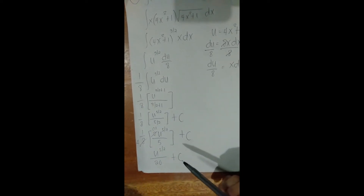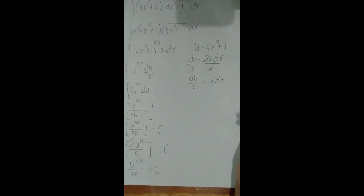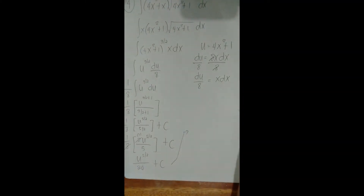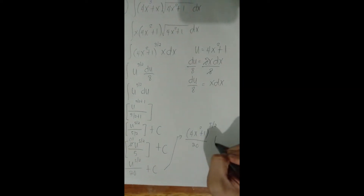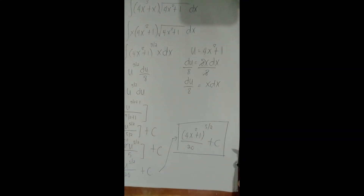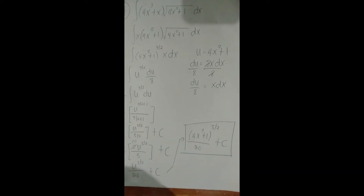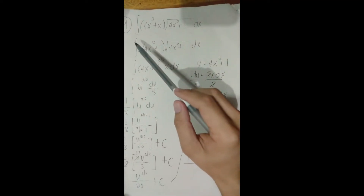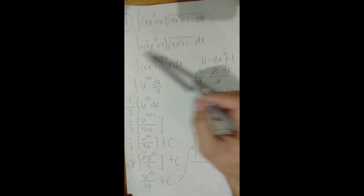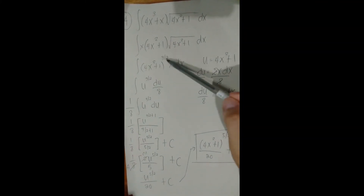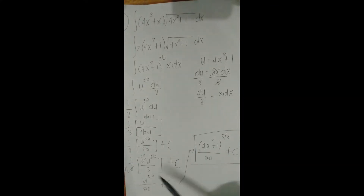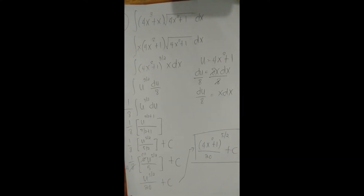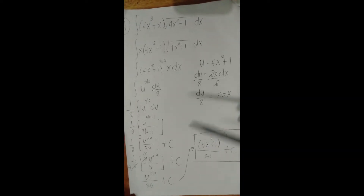We're not done yet — we need to bring back u in terms of the original variable. Replacing u with 4x² + 1, our final answer is (4x² + 1)^(5/2) / 20 + C. Quick recap: we used an algebraic trick to factor out x, combined same-base terms adding exponents (1/2 + 1 = 3/2), then performed substitution and applied the power formula. Practice is key here.